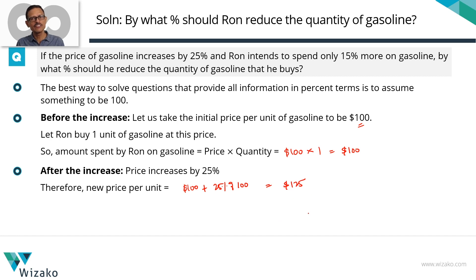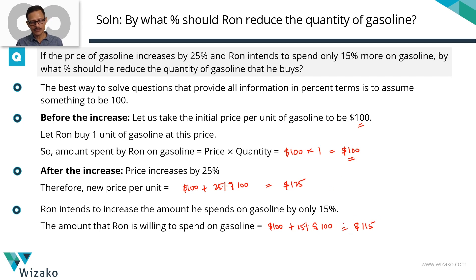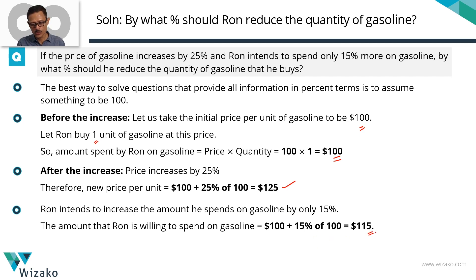This $100 base is going to help us in the next step as well. Ron is increasing the amount he'll spend on gasoline by 15%. How much did he initially spend? He spent $100 initially. So he's increasing it by 15% of $100, which is just 15. So the new amount that he's willing to spend is $115.